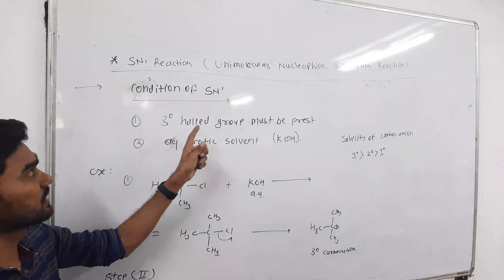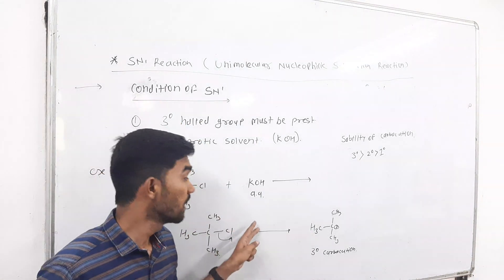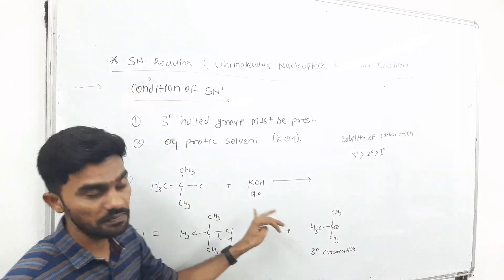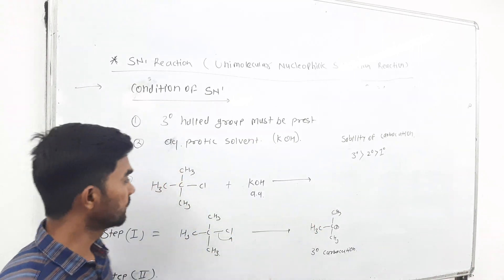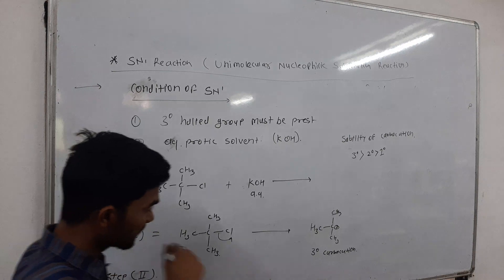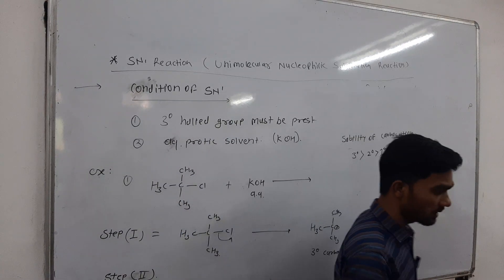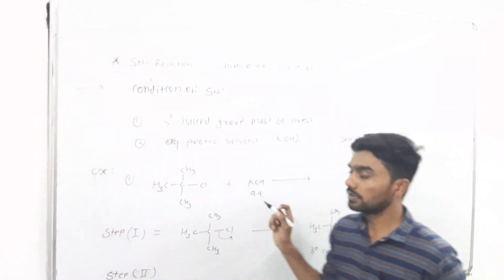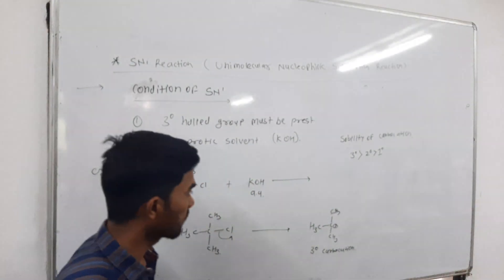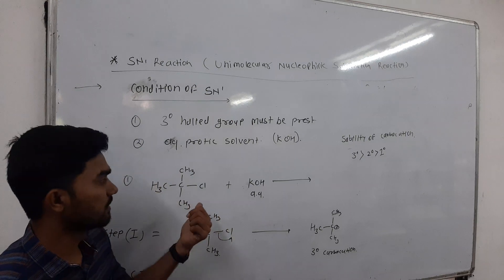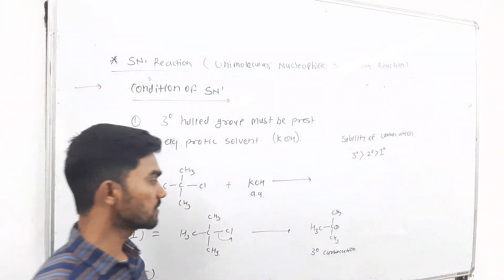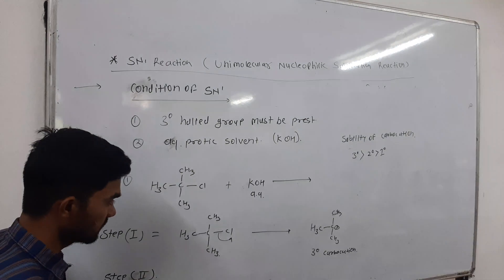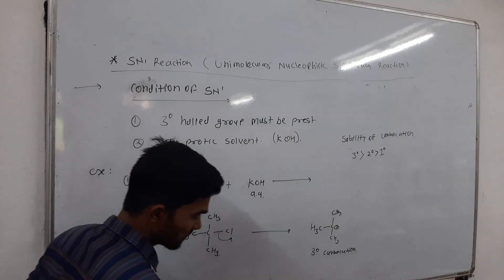The first step of the SN1 reaction is the rate-determining step. The rate depends upon the starting material only and does not depend on the nucleophile. The tertiary carbocation is more stable, and the leaving group is self-removed, forming the tertiary carbocation. This is the rate-determining step (RDS).